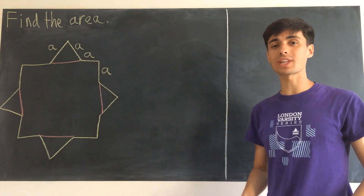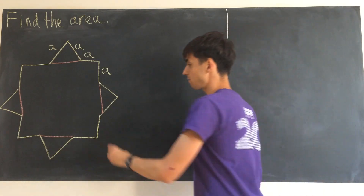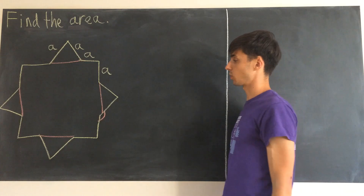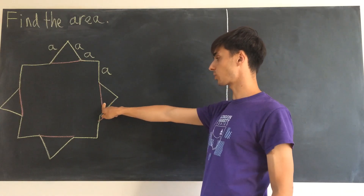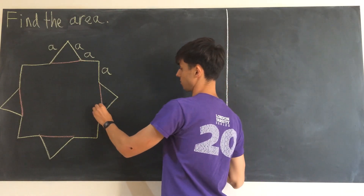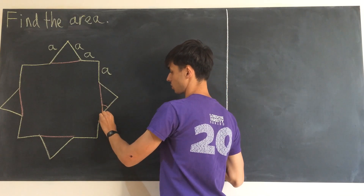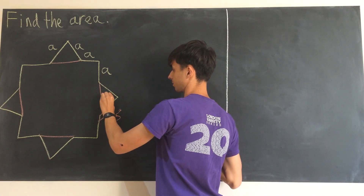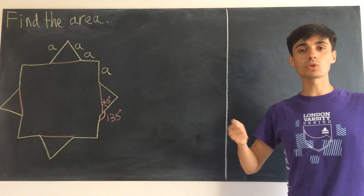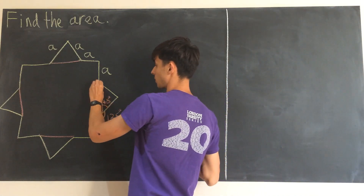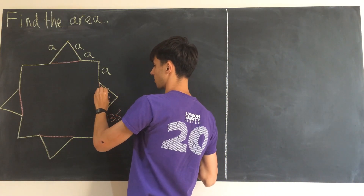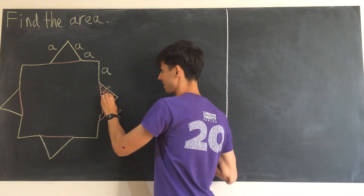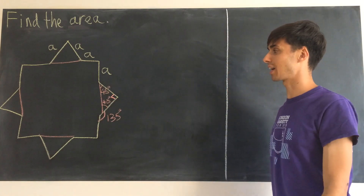Let's think about some properties of octagons. The exterior angle of an octagon is 45 degrees and the interior is 135 degrees. Because everything in the diagram is symmetrical, this angle here is also 45 degrees, and since angles in a triangle must add up to 180, that remaining angle has to be a right angle.